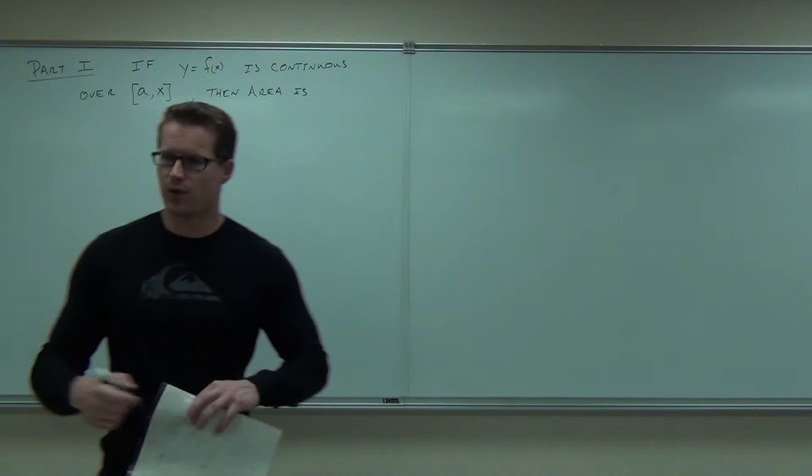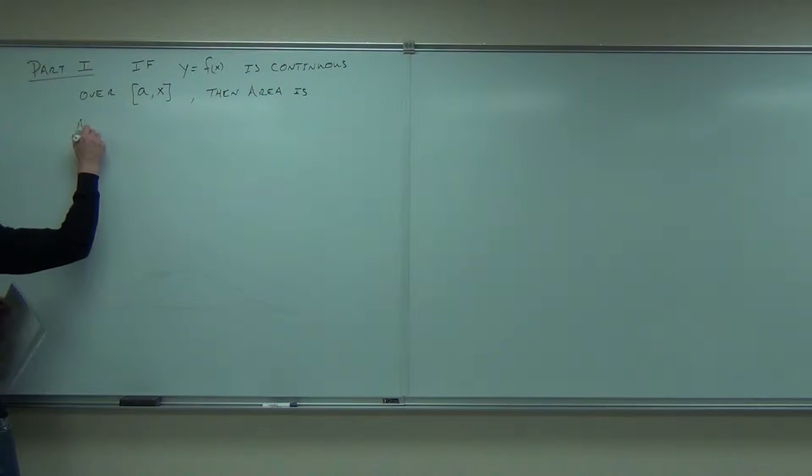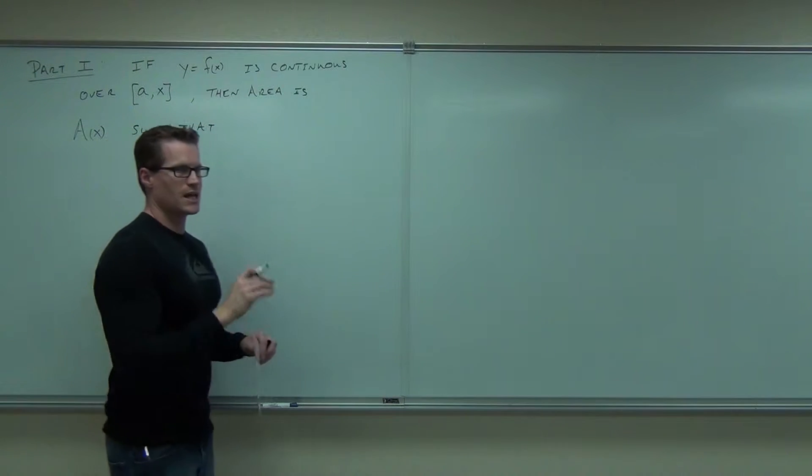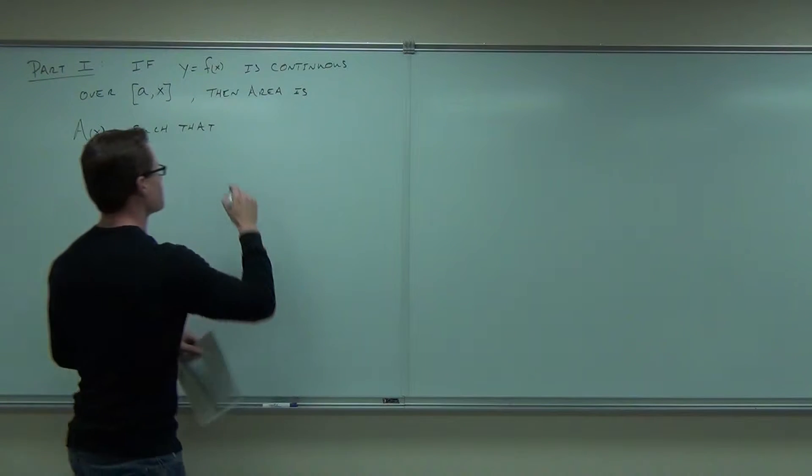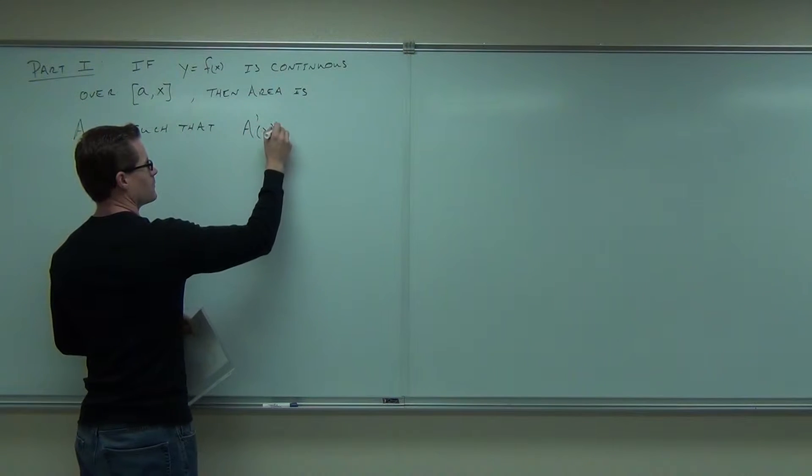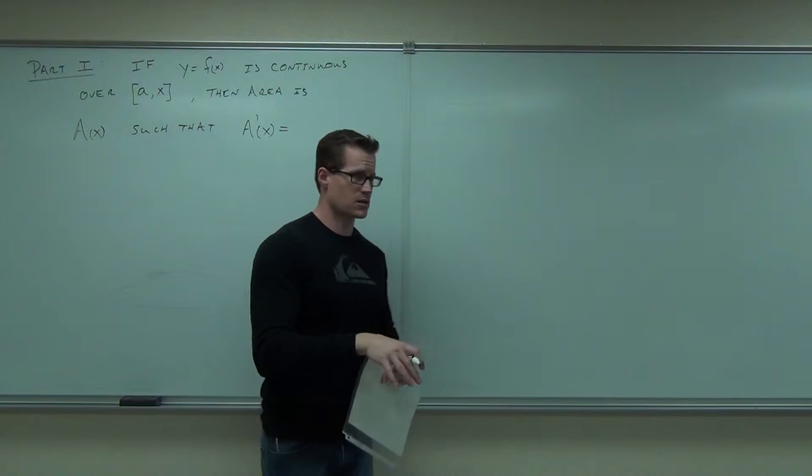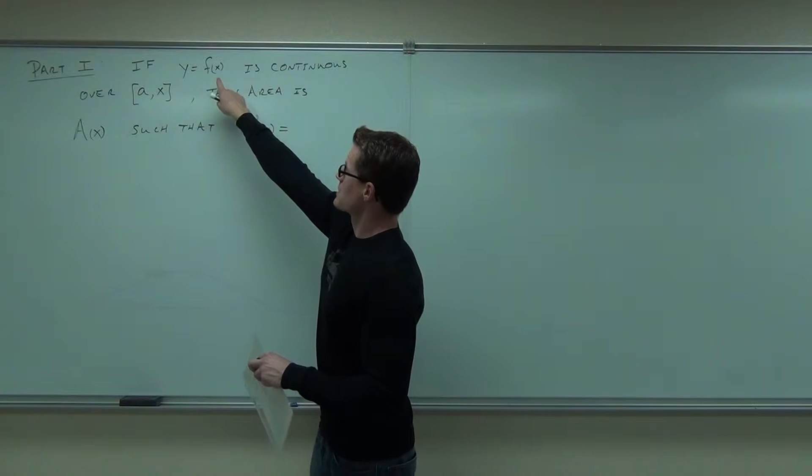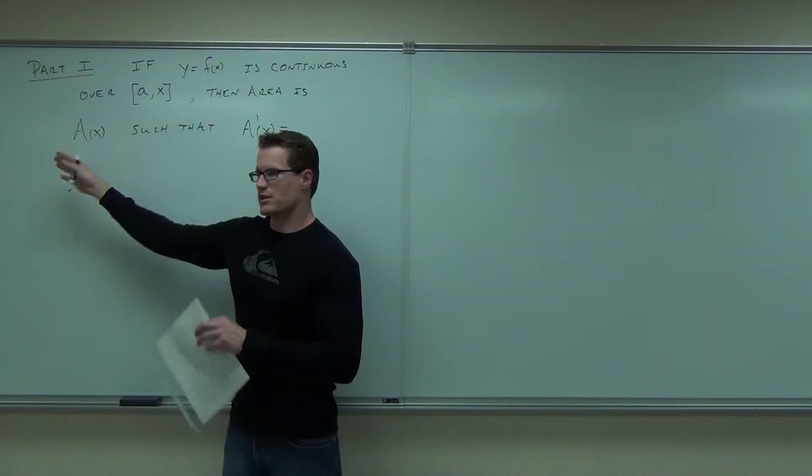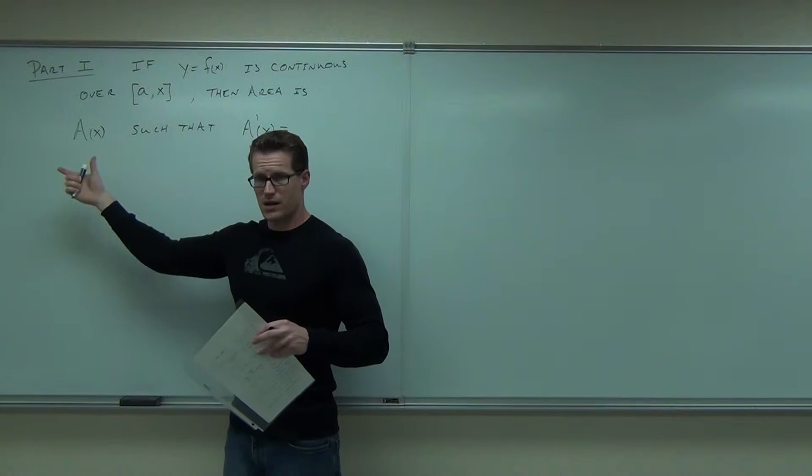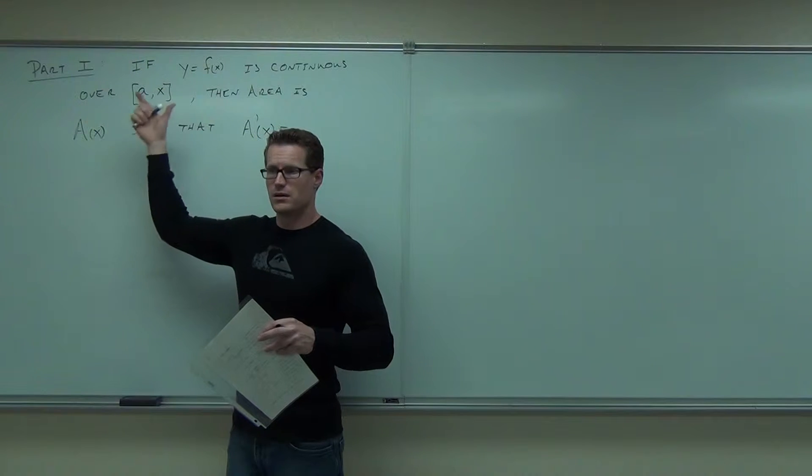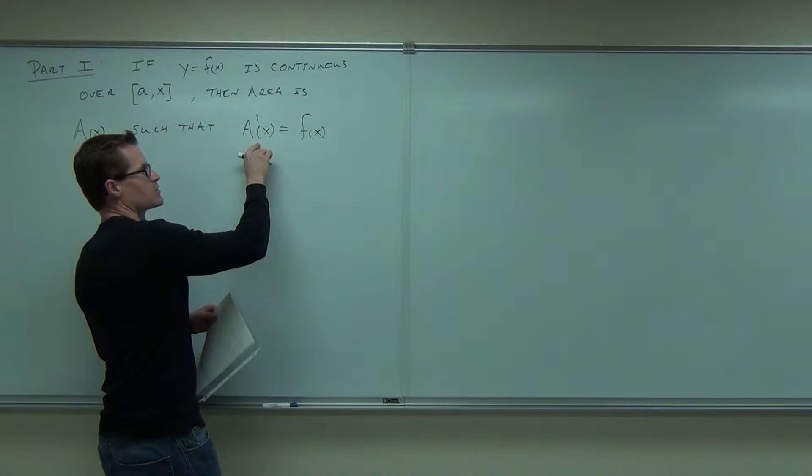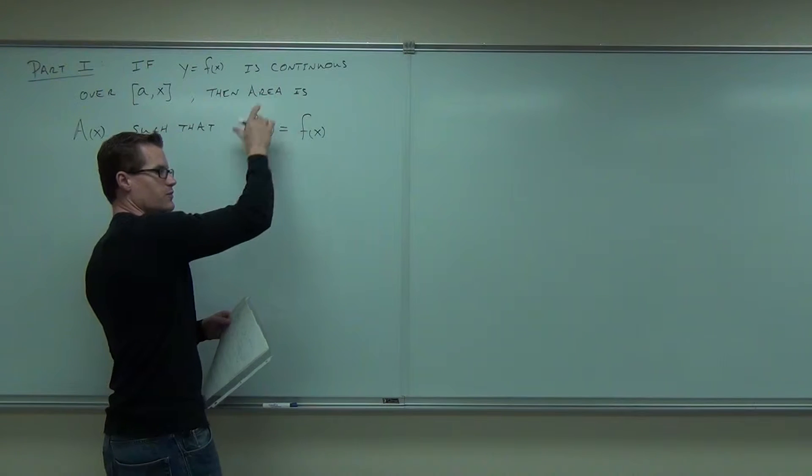Then the area is A of x. We already know that. Area is going to be some area function, such that when I take the first derivative of my area, what does it have to give me in this case? F of x. Very good. So if f of x is continuous over this, then the area is A of x, some area function, and the derivative of the area function must give me back my function, my original function. That was the antiderivative thing.